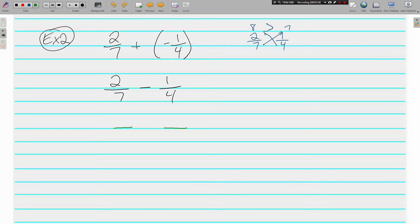Common denominator for 7 and 4 is 28, and that's times 4, so 2 becomes an 8, and this is times 7, so the 1 becomes a 7. Different signs we are subtracting. 8 minus 7 is 1, 28th.